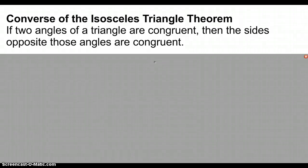This video is going to walk you through the converse of the isosceles triangle theorem and also a couple of examples where the converse of the isosceles triangle theorem is applied. So this theorem says that if two angles of a triangle are congruent, then the sides opposite those angles are congruent.